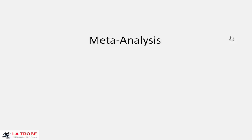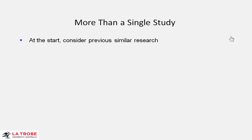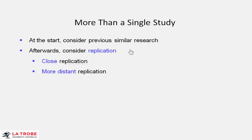Meta-analysis is simply analysis that combines data from more than a single study. We always need to have in mind in research more than just our study. At the start of our study, we consider previous similar research, and afterwards we consider what comes next.